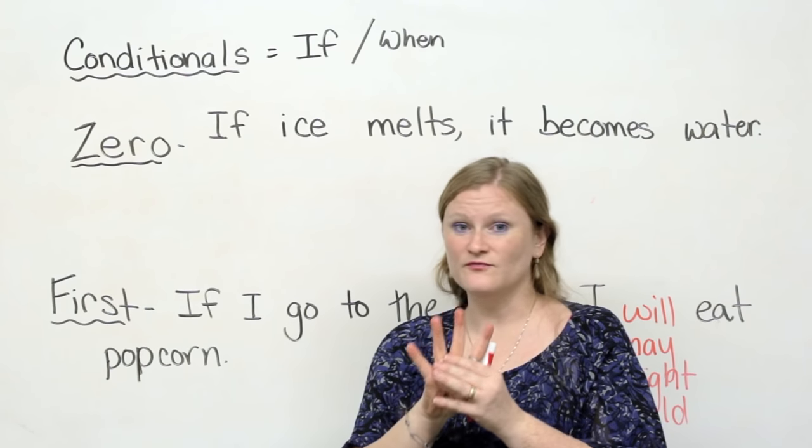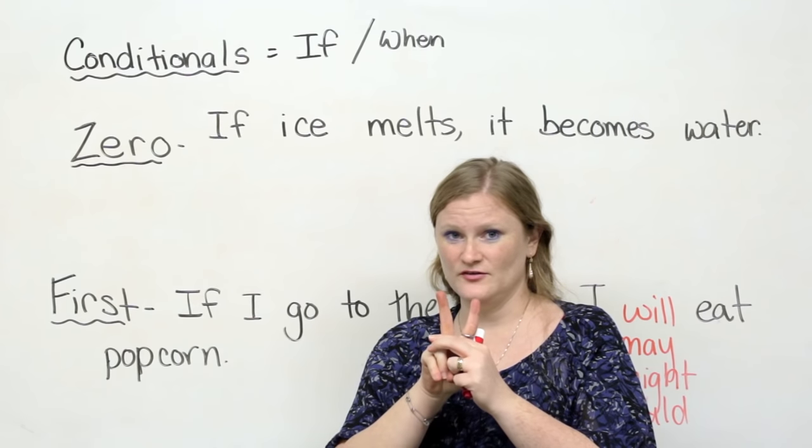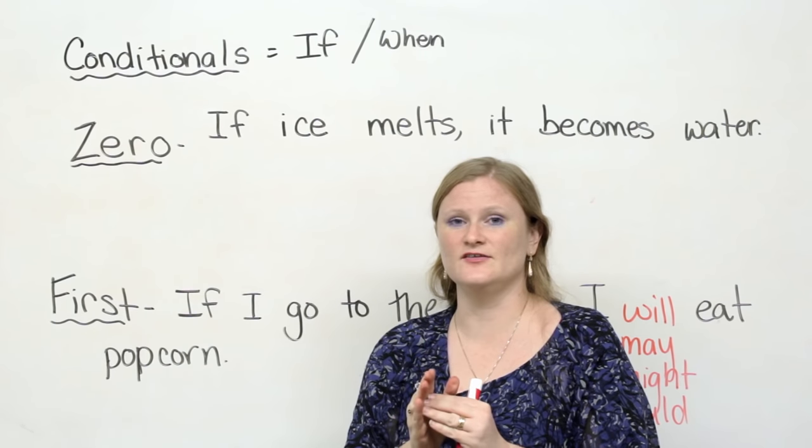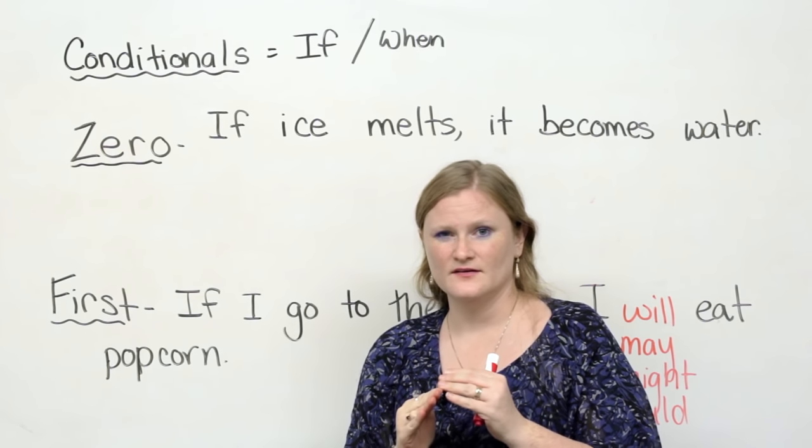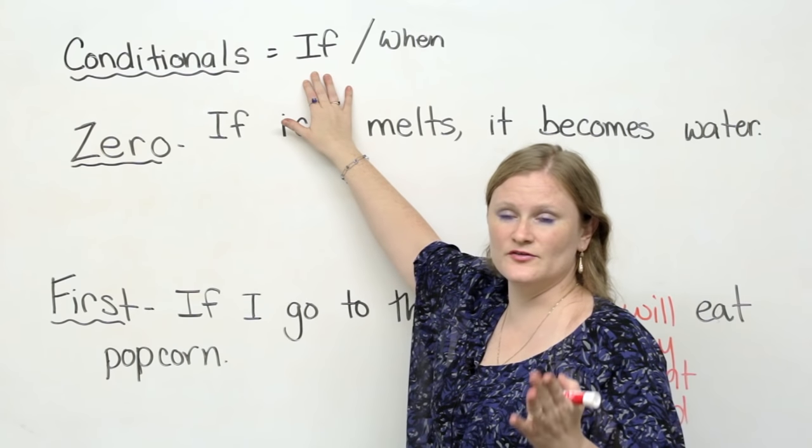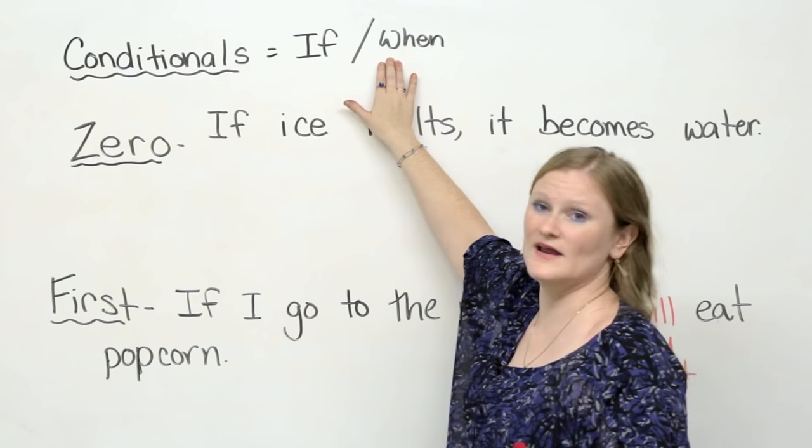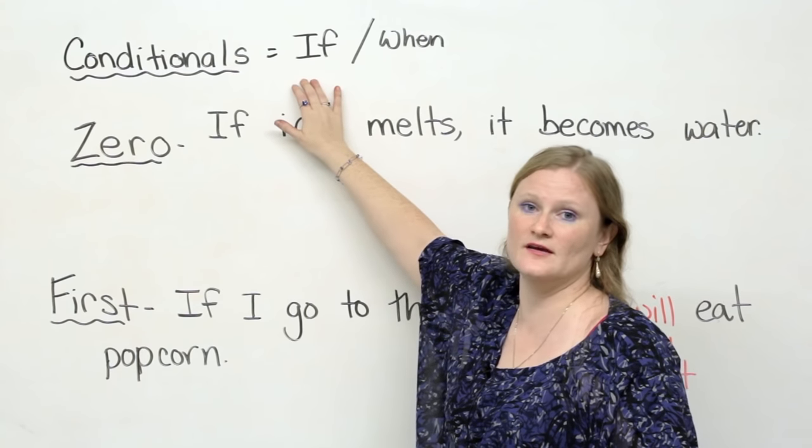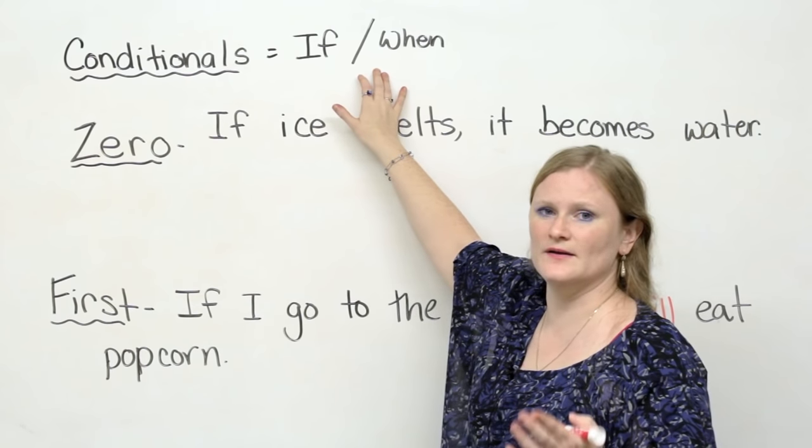In English, we have four conditionals. I'm going to teach you two. These are the easiest, and you'll get them, I promise. Conditionals in English always start with if or when. Most of the times, you're going to start with if, but you can also use when.